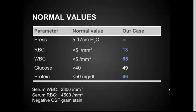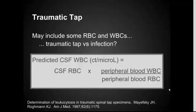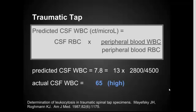I want to talk about traumatic taps and how to interpret these results. We're trying to figure out if the white blood cells we're seeing come from an inflammatory response such as infection, or from the traumatic tap itself. There's a formula where you compare the ratio of white blood cells to red blood cells in the serum to that same ratio in the CSF to predict what the expected CSF white blood cell count should be. Using this formula, the predicted CSF white cell count was 7.8, given 13 red blood cells in the CSF. Our actual CSF white blood cell count was 65, so it's pretty safe to say this reflects an inflammatory response from infection, not just the traumatic tap.